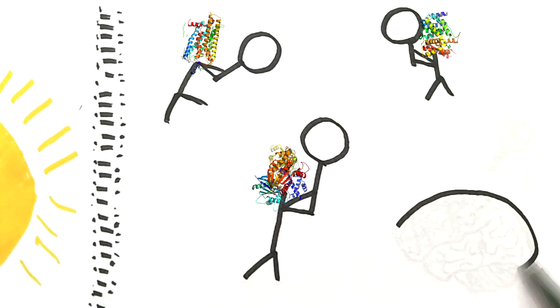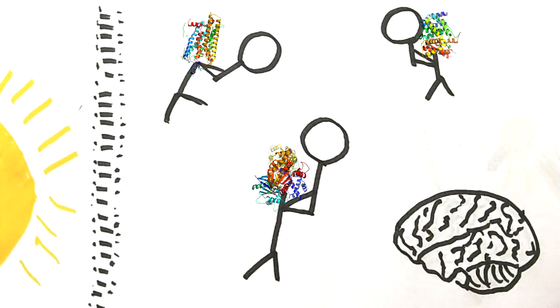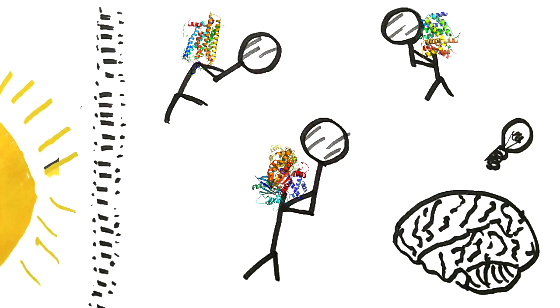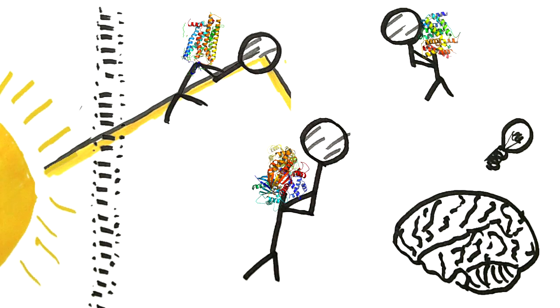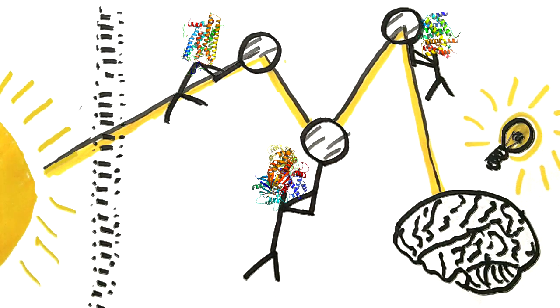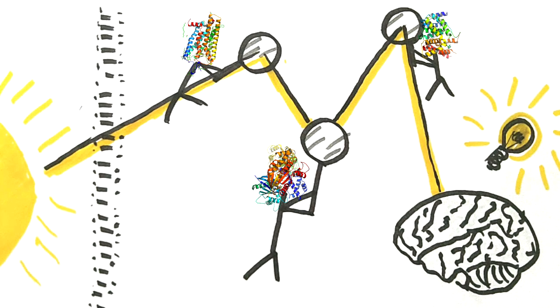The information about the photon absorption in the rhodopsin protein gets rapidly forwarded to the brain by several other proteins. It has been shown that only one absorbed photon is enough to create a response in the brain, so if you want to impress your friends next time, tell them about your single photon detector.